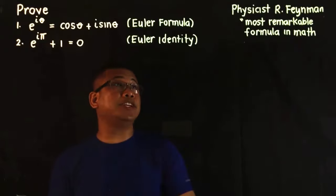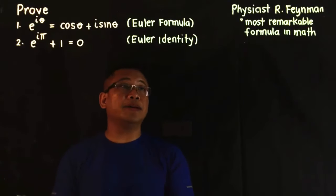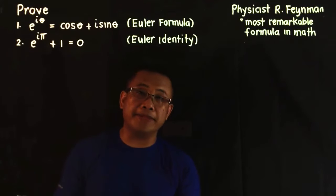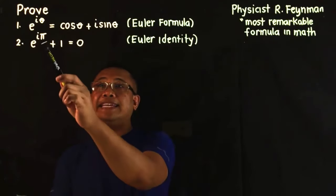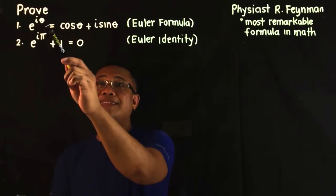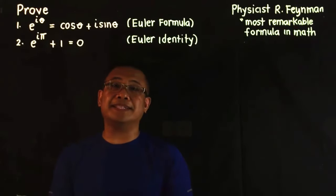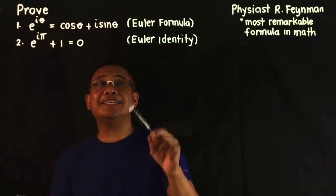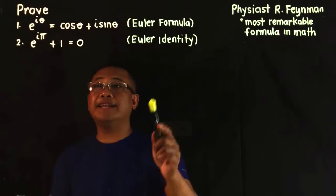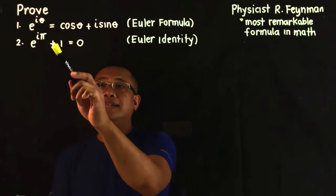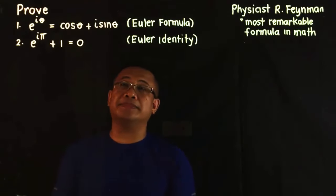The famous physicist Richard Feynman describes this formula as one of the most remarkable formulas in mathematics. The Euler formula is e raised to i theta equals cosine theta plus i sine theta. A special case of that Euler formula is the Euler identity, given by e raised to i times pi plus 1 equals 0.